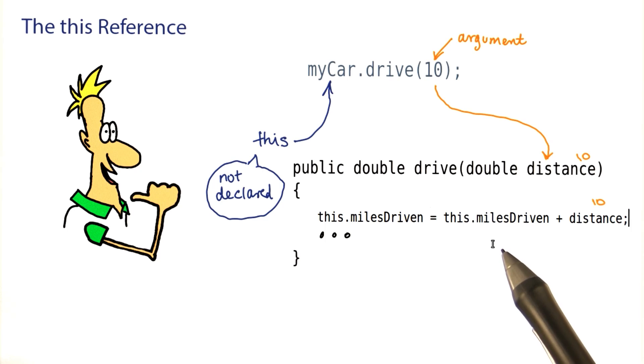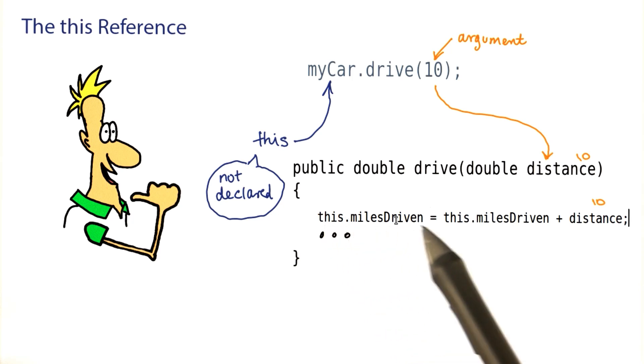It's optional to use this, but some people like it a lot, because it makes it very clear which are the instance variables, and which ones are local or parameter variables.